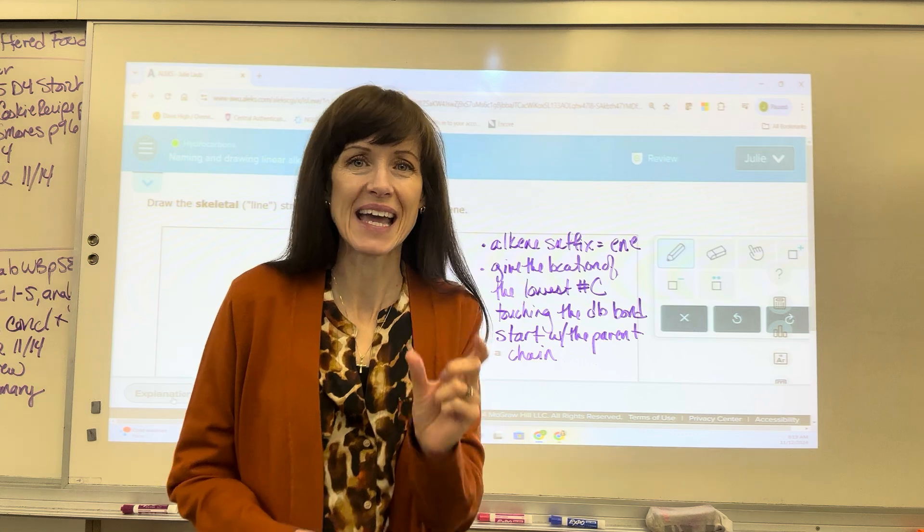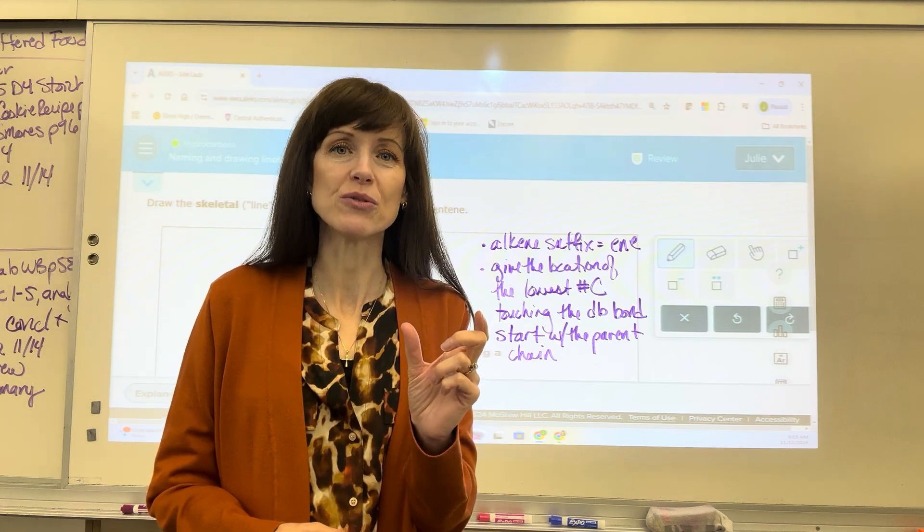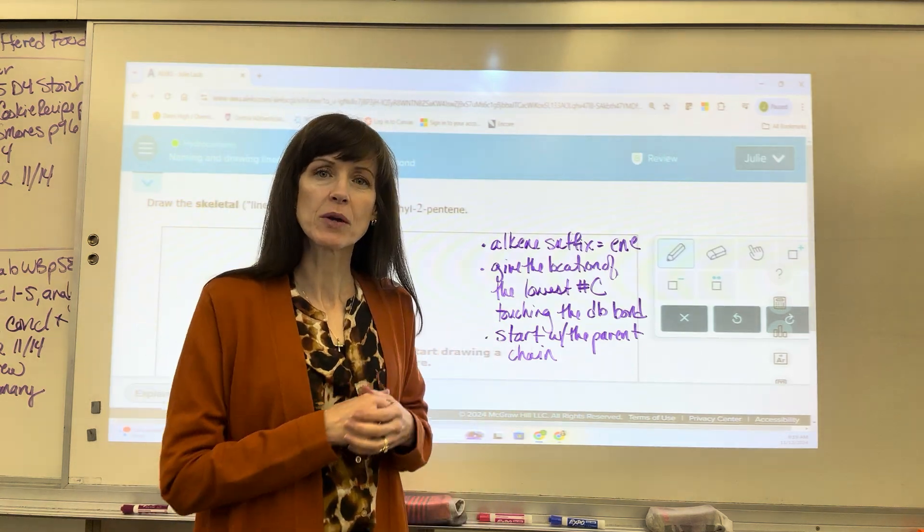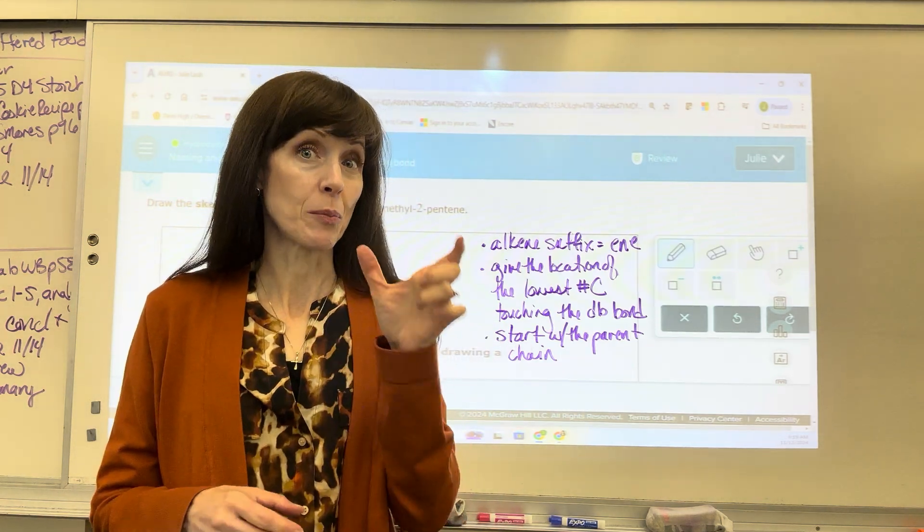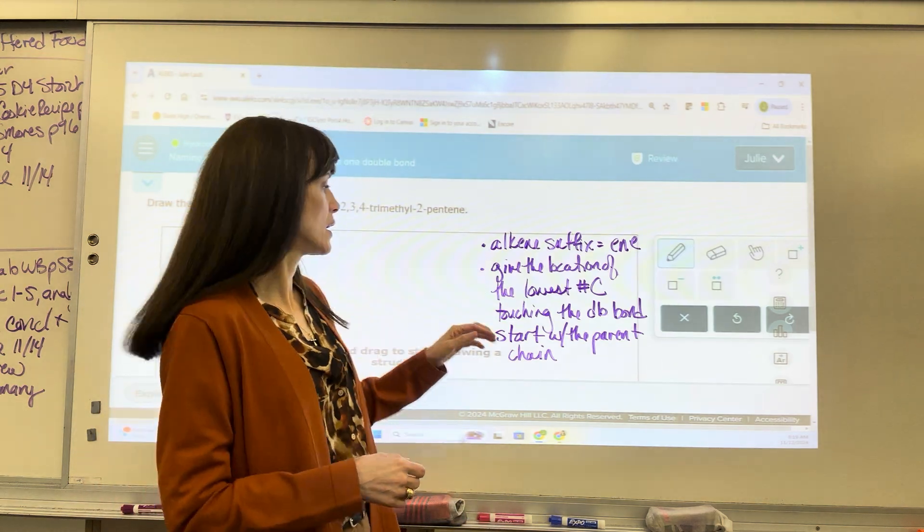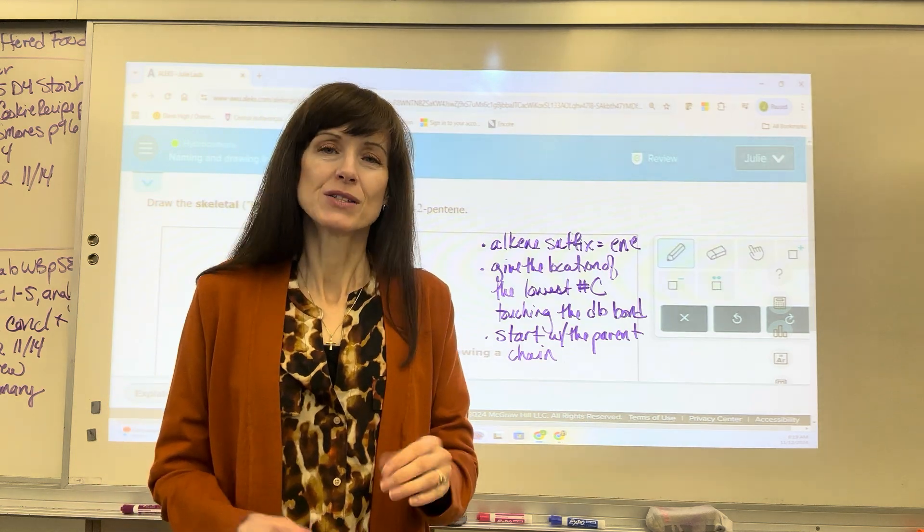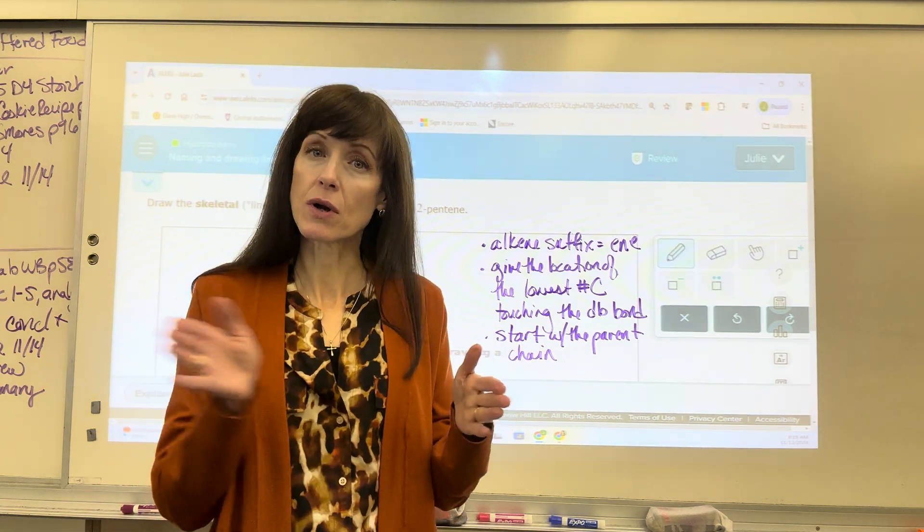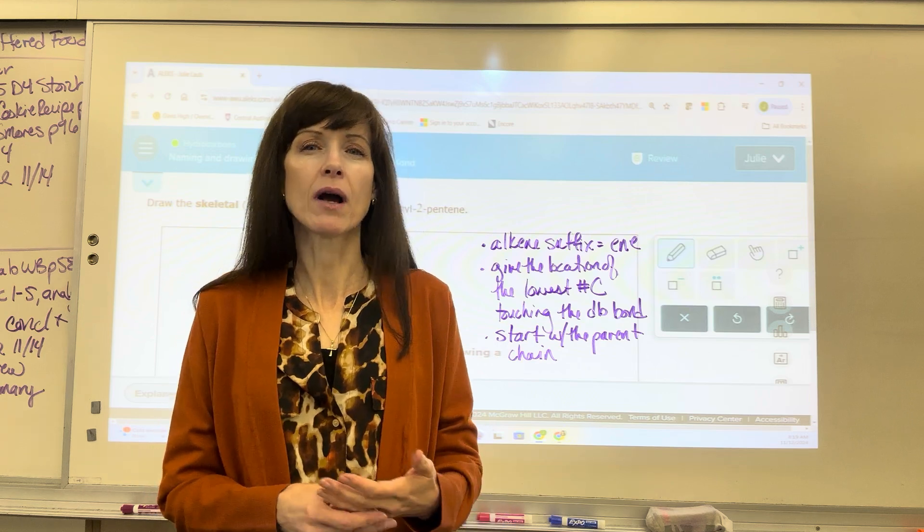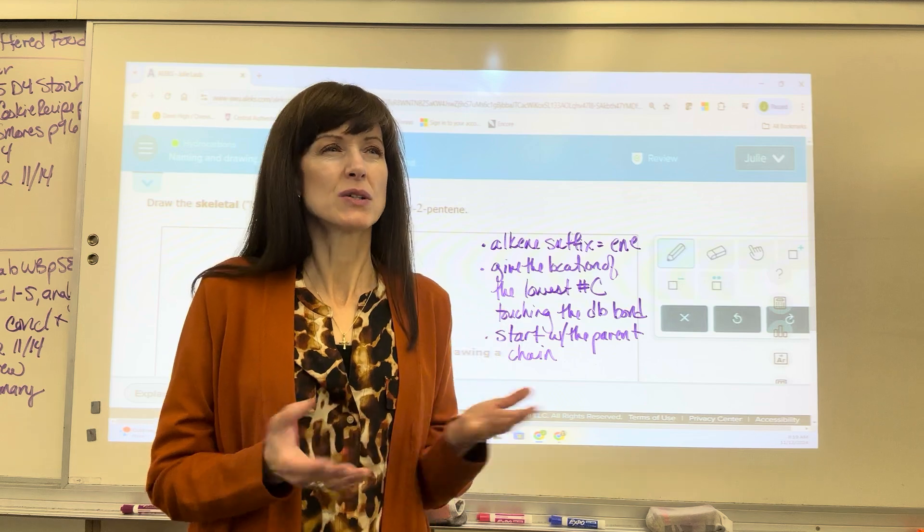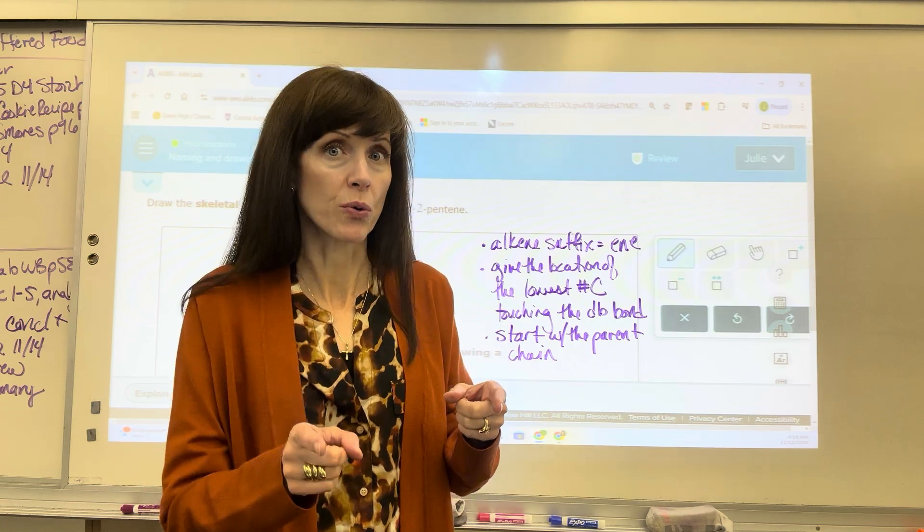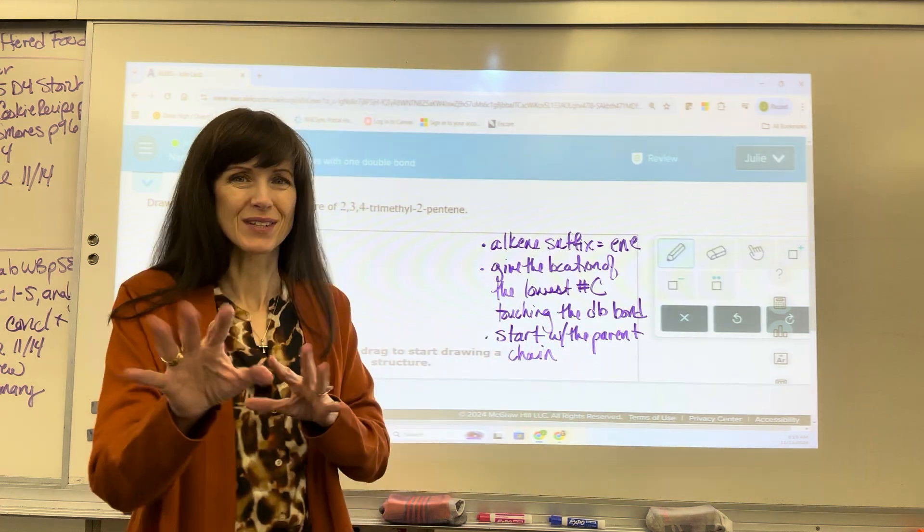Now a couple of notes to pull this back into your brain. Alkenes have the suffix E-N-E. When you see that E-N-E, you know there is a double bond somewhere in that carbon chain. This particular topic, we're only going to have one double bond. We are going to give the location of the lowest carbon number. I tell my students it's the first carbon to touch the double bond. We have to tell the reader where that double bond is and we always give the number that's the smallest. So if I have a double bond between the two and the three carbon, I would say the two in front of my double bond.